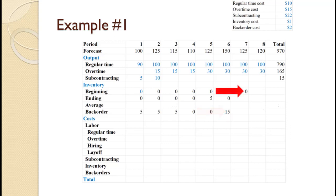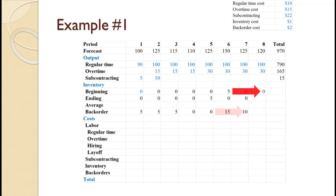For period 7, beginning inventory is 0. We need 125 for the forecast plus 15 backordered equals 140. We only make 130, so ending inventory is 0 and backorders are 140 minus 130 equals 10. For period 8, beginning inventory is 0. We need 120 for the forecast plus 10 backordered equals 130. We make 130, so ending inventory is 0. In general, the ending inventory and ending backorder value for the last period should both be 0, unless the problem gives you a reason for a different value.